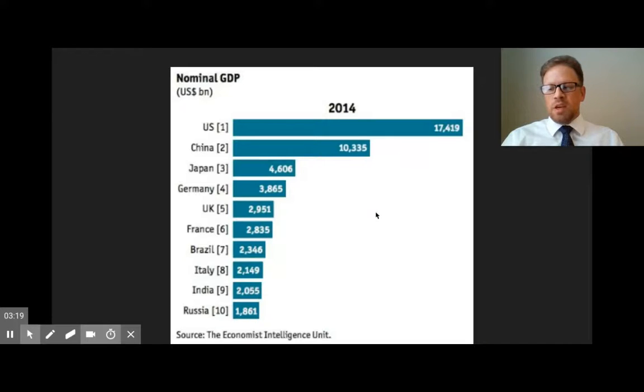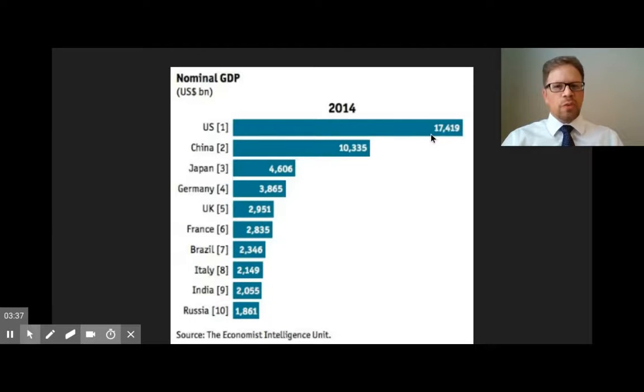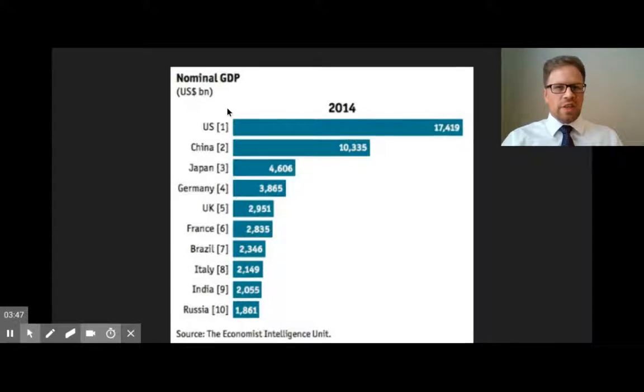Nominal GDP is actually stated in current prices. If you use nominal GDP, an increase in GDP may reflect not only increases in production of goods and services, but it might also include increases in overall prices. Because of this problem, you want to make sure that you're actually producing more from year to year, and it's not just inflation making it look like you're producing more.